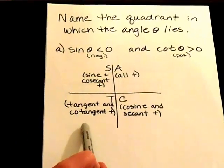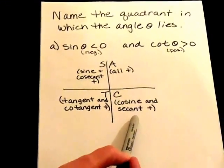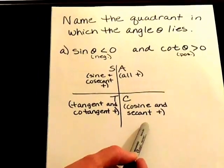Third quadrant, tangent and cotangent are positive. In the fourth quadrant, we have cosine and secant that are positive. So we can start eliminating which ones are negative.